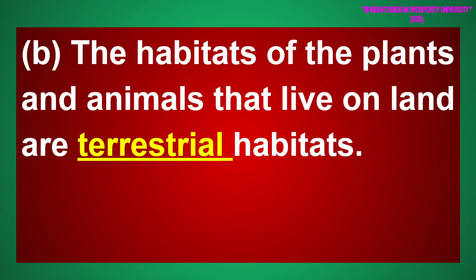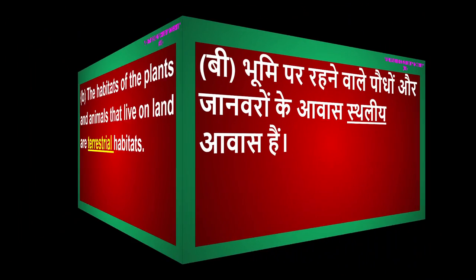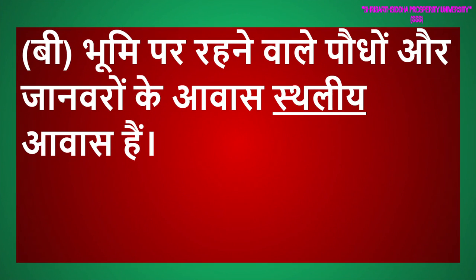B. The habitats of the plants and animals that live on land are terrestrial habitats. भूमि पर रहने वाले पौधों और जानवरों के आवास स्थलीय आवास हैं।